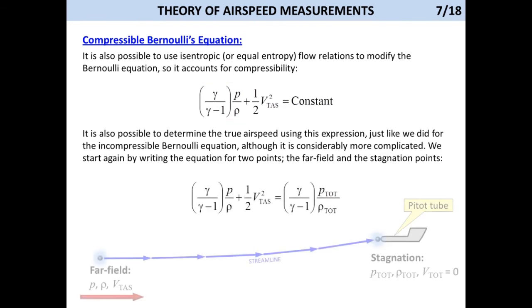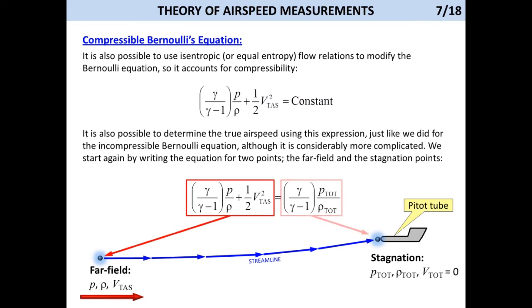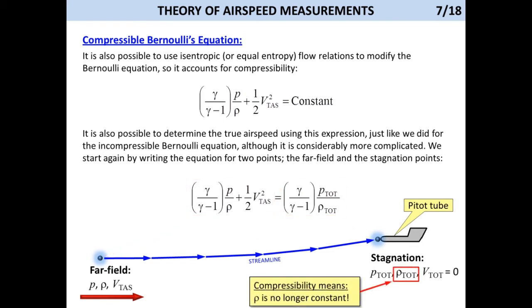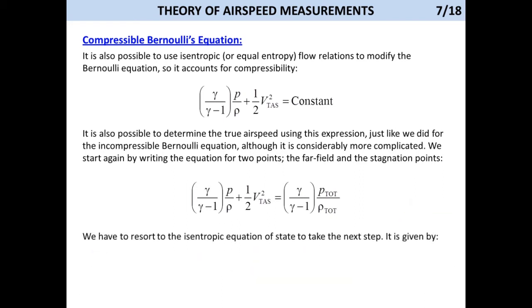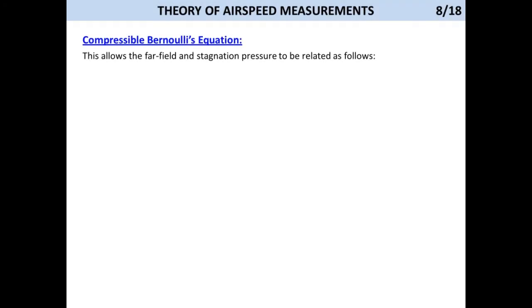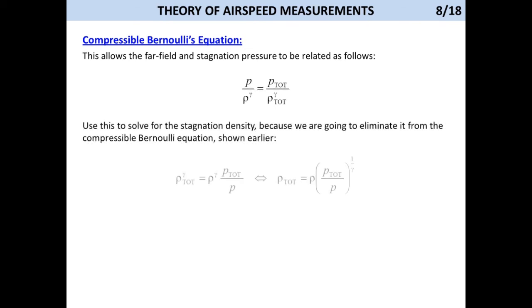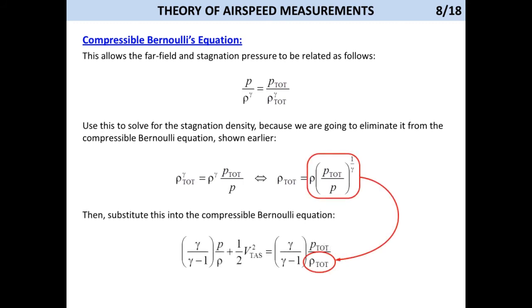We start again by writing the equation for two points. The one to the left of the equal sign is the far field condition, and the one to the right is at the opening of the pitot tube. Now, TOT indicates the total pressure and density at the stagnation point. The next step requires the use of the so-called isentropic equation of state, which students are introduced to in the thermodynamics class. But it allows the far field and stagnation pressure to be related as shown here. Then we use this to solve for the stagnation density, because we are going to eliminate it from the compressible Bernoulli equation shown earlier.